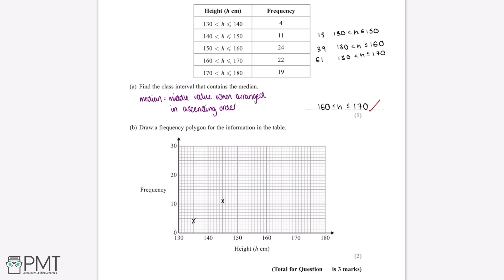Heights between 150 and 160 centimetres: the midpoint is 155 centimetres and the frequency is 24, so we plot the point (155, 24). Heights between 160 and 170 centimetres: the midpoint is 165 centimetres and the frequency is 22, so we plot the point (165, 22). Finally, heights between 170 and 180 centimetres: the midpoint is 175 centimetres and the frequency is 19, so we plot the point (175, 19).